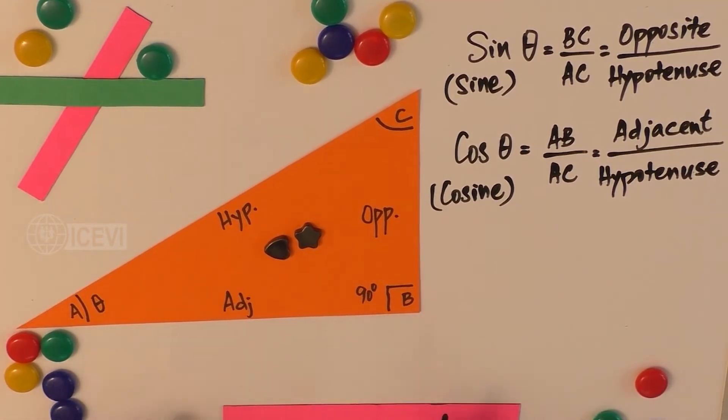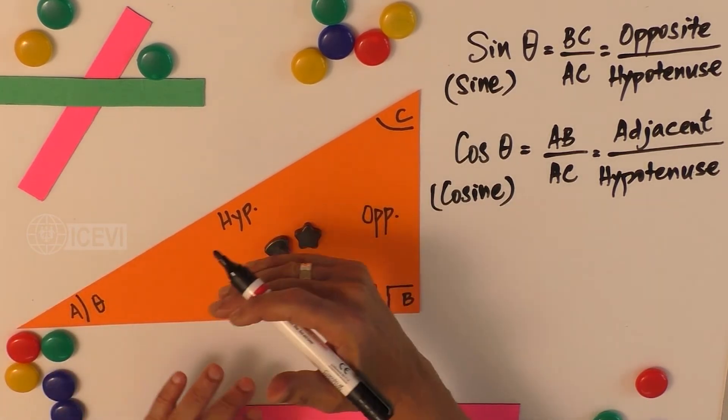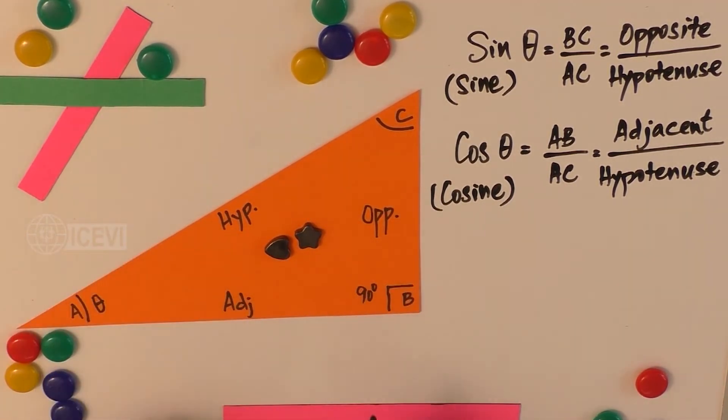Now, what are the other two sides left? We have to see all the combinations. There are three sides and we have to see all the combinations.